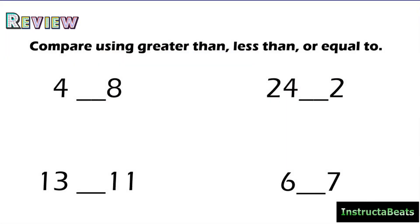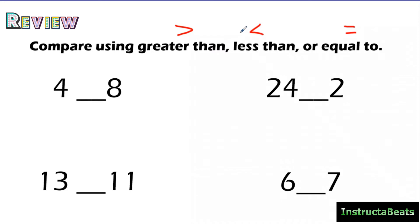Let's go back and review the symbols we use when comparing numbers. These are called inequalities. We have greater than, less than, or equal to. The way I remember this — we always read left to right. Greater than: your greater number is on the left, that's why the alligator's mouth is going to eat the bigger number. Less than: the smaller number is on the left, that's why the alligator's mouth is facing the opposite way. And then of course we have equal to.